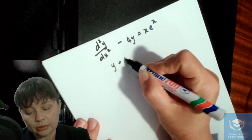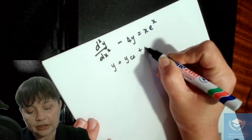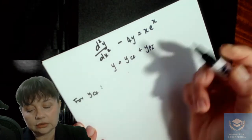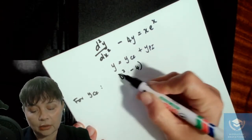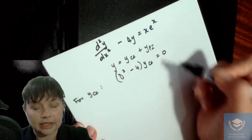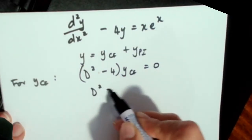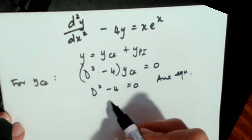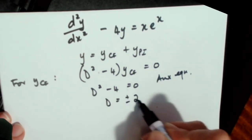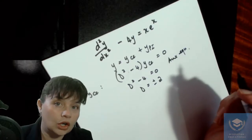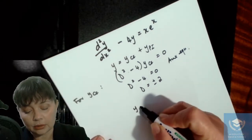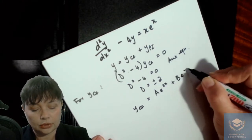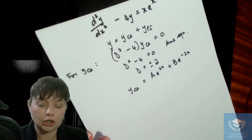We know our solution is going to be made up of the complementary function plus our particular integral. For our complementary function, if we write this in D-operator form, our equation looks like that. D squared minus 4 equals zero is the auxiliary equation. The solution of this is going to be plus or minus 2. So our roots are real and different, which means the complementary function is going to be Ae to the 2x plus Be to the minus 2x.